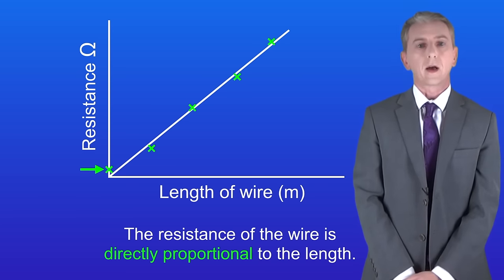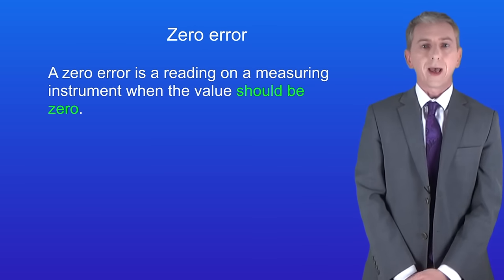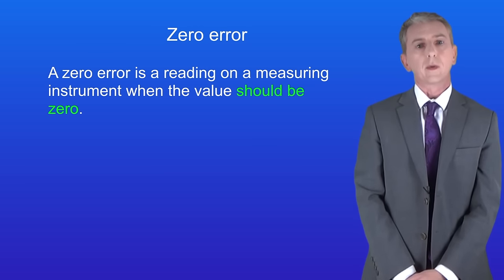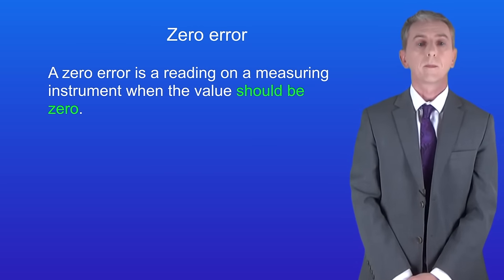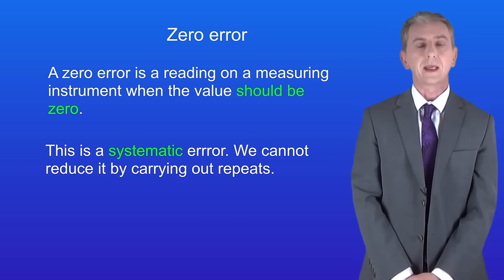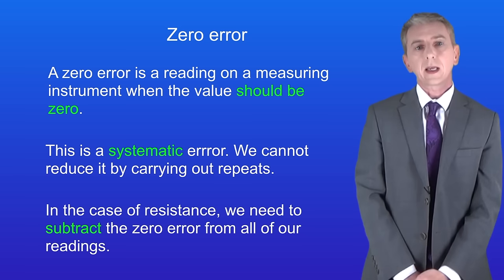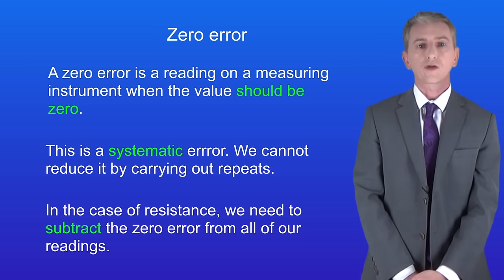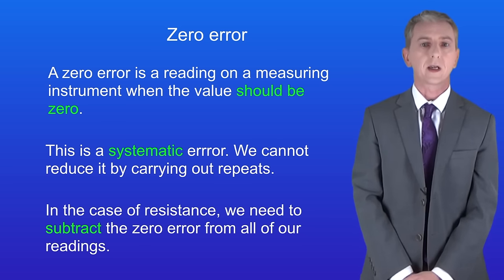So let's look at that now. A zero error is a reading on a measuring instrument when the value should be zero. That's a systematic error. We cannot reduce it by carrying out repeats. In the case of resistance, we need to subtract the zero error from all of our readings.